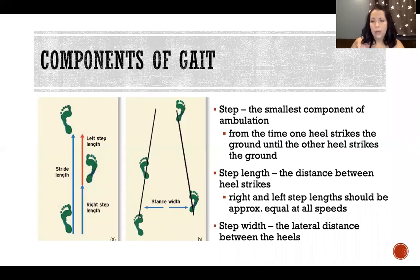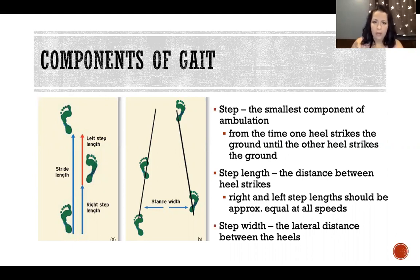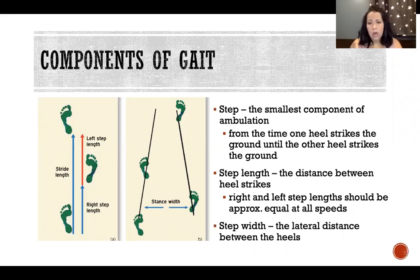The components of gait: a step is the smallest component of the gait cycle. We count a step from the time one heel strikes the ground until the other heel strikes. Step length is how far you travel in that one step — the distance between heel strikes — and right and left step length should be equal regardless of speed. Step width is the lateral distance between the heels, or how far apart our feet are.